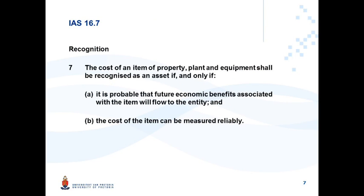Let's now look at the recognition criteria in IAS 16. Once we've identified that an item must be classified as property, plant and equipment, we need to determine whether that item can be recognized as property, plant and equipment. The cost of an item of property, plant and equipment shall be recognized as an asset if and only if it is probable that future economic benefits associated with the item will flow to the entity, and the cost of the item can be measured reliably.